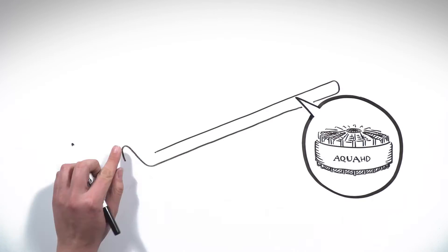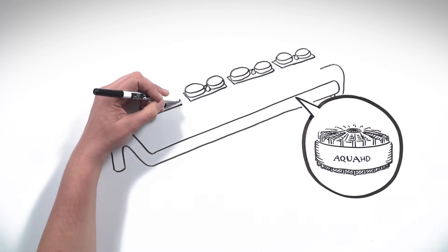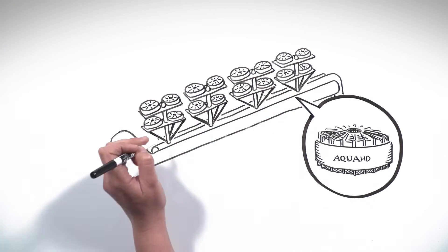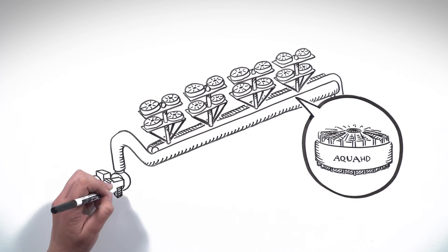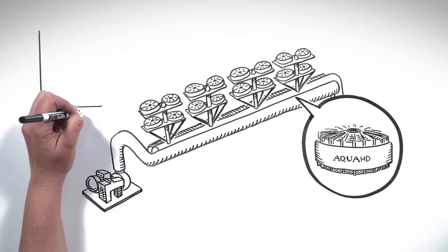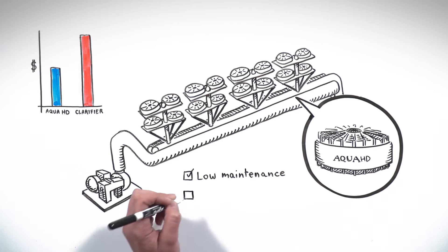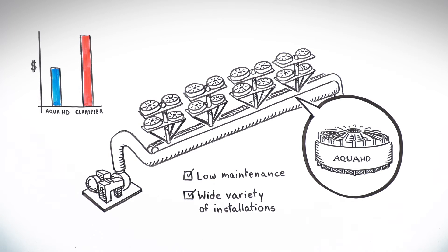It can handle a higher dirt load and uses up to 70% less floor space, and so there is no harm to the countryside or ecosystem. It uses only five to eight meters of pressure, and from a total cost of ownership, Aqua HD saves 50% and more. Aqua HD requires low maintenance with no moving parts, and the system fits a wide variety of installations.